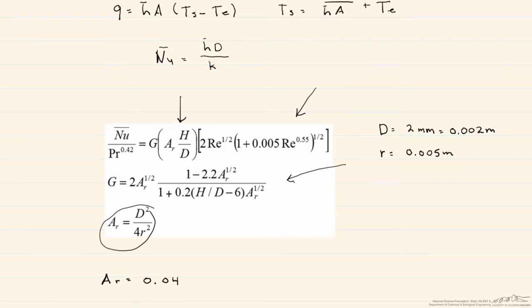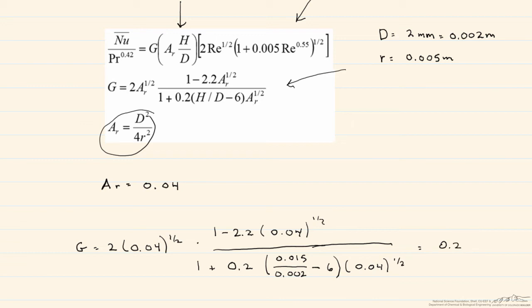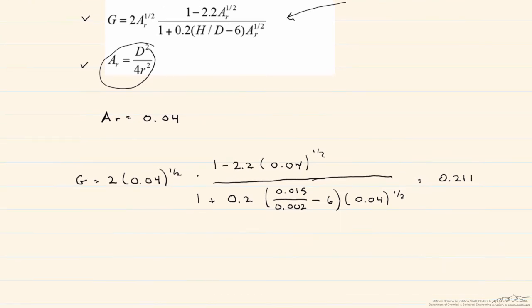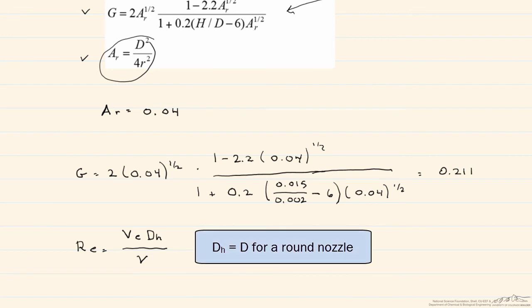Now let's find G. When we calculate G, we get 0.211. Now we need to find this third value, and to do that we need to determine the Reynolds number. Our Reynolds number equals the velocity at the exit times the hydraulic diameter divided by the kinematic viscosity. That hydraulic diameter is just equal to the diameter of the nozzle.